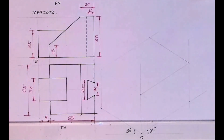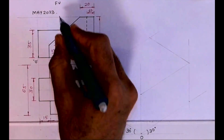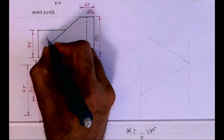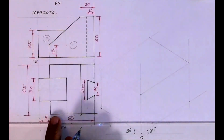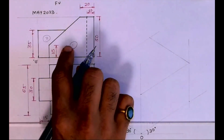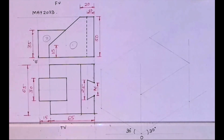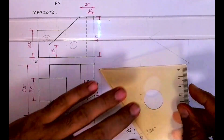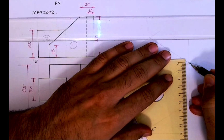Welcome to technical drawing. Today we'll see this seminar on isometric drawing. It is the May 2023 Mumbai University engineering drawing paper. In the front view there are two parts — part one and part two. In the top view there are three parts. Part one is nearer to you, so we'll start with part one and draw it first.